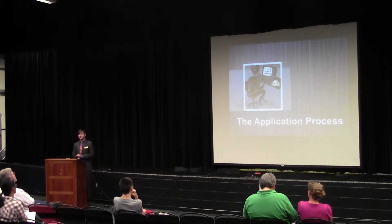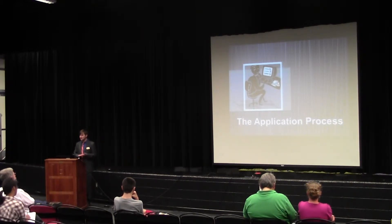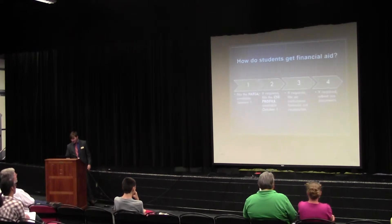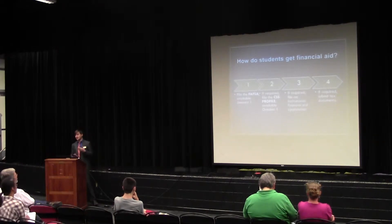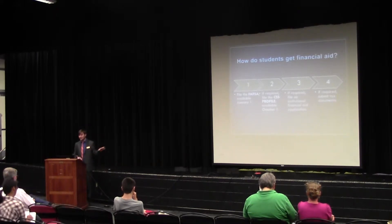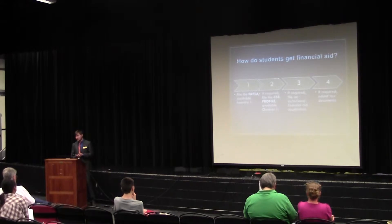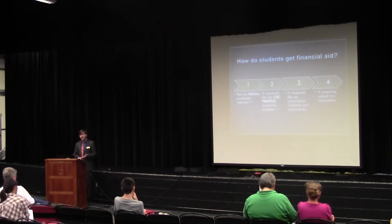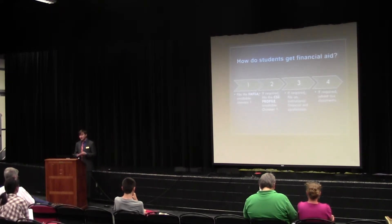That brings us to the application process. I'm going to give you a high-level overview of how the financial aid application process works. For many people, this starts with the FAFSA — the Free Application for Federal Student Aid — done at FAFSA.gov. You can also do it by paper via regular mail. Basically you go to the federal application site and complete it. It will ask for various information such as income, assets, household size, number in college, and things of that nature, to determine the Expected Family Contribution.